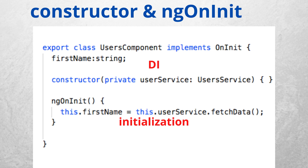ngOnInit is the most usable lifecycle hook, as we can initialize all methods and variables there. When you need to initialize any member, any method, or get initial data for a component, we use ngOnInit. This lifecycle hook is implemented after all data-bound properties are set. Importantly, ngOnInit is called only once. A very common interview question is: what's the difference between constructor and ngOnInit? You might wonder why place initialization logic in ngOnInit when you can do it in the constructor.